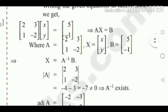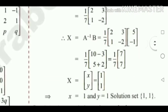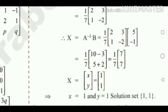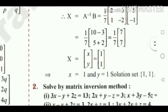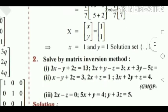Then x equals A inverse into B. The value of B is 5 and minus 1 from the question. Multiply: 1 by 7 into the matrix 2, 3, 1, minus 2 into 5, minus 1. You get 1 by 7 into 10 minus 3, and 5 plus 2, which equals 1 by 7 into 7 and 7. Dividing 7 by 7 gives 1 and 1. Therefore x equals 1 and y equals 1.